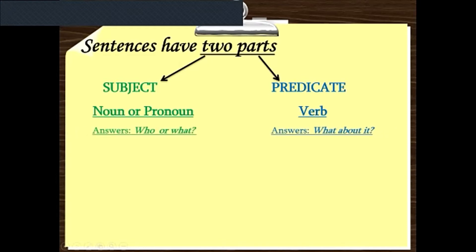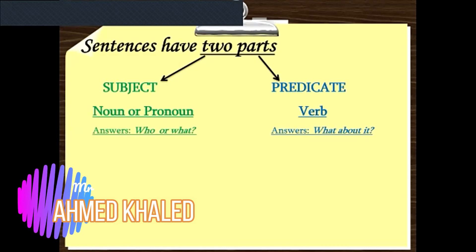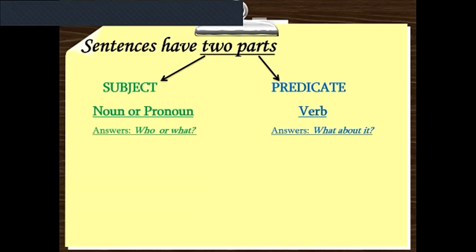You can see here we have two questions. I can ask myself to know where the subject is: who does or did the action, or what does or did the action? Like 'He smiles,' so where is the subject? He. And where is the predicate? Smiles.